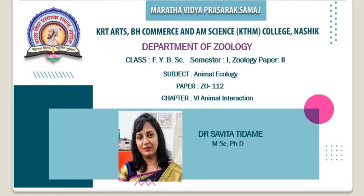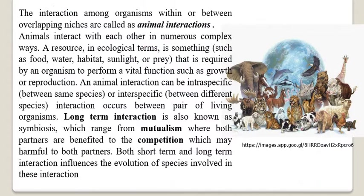In the present lecture we'll be focusing on animal interaction. Everybody knows that different types of animals are living together on this planet Earth — terrestrial, arboreal, aquatic — all of them living together and showing some kind of interaction with each other, maybe for food, maybe for shelter, or anything else.